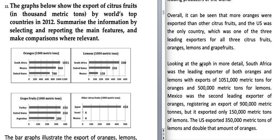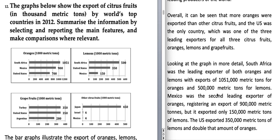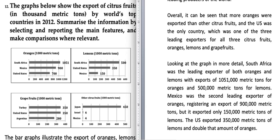Looking at the graph in more detail, South Africa was the leading exporter of both oranges and lemons, with exports of 1,051,000 metric tons for oranges and 500,000 metric tons for lemons. Mexico was the second leading exporter of oranges, registering 900,000 metric tons, but exported only 150,000 metric tons of lemons. The US exported 350,000 metric tons of lemons and double that amount — 700,000 metric tons — of oranges.